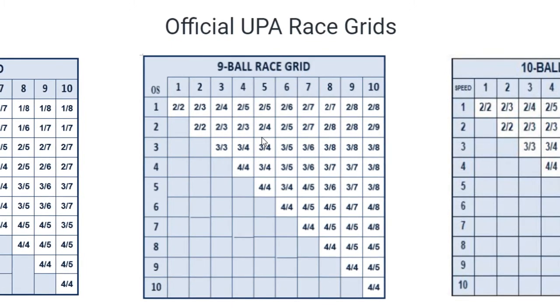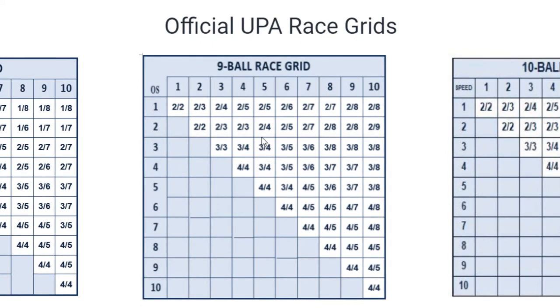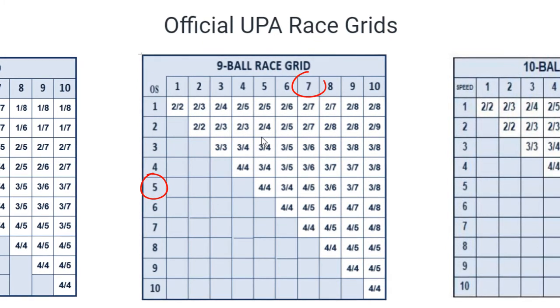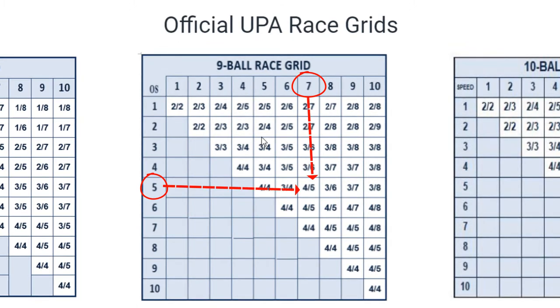So to be able to determine the race, you simply look up the official speed, which would be 5 in this case, and then the 7, then you just line them up and you'll find that it's a 4-5 race.